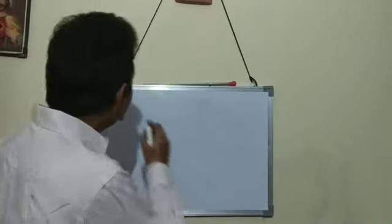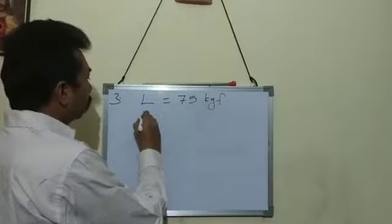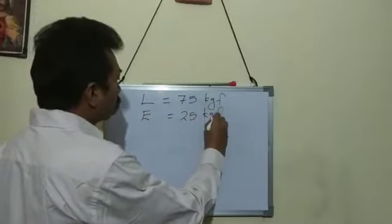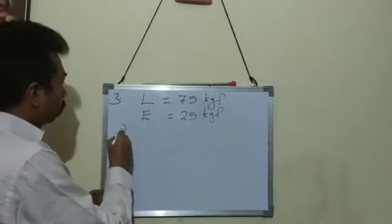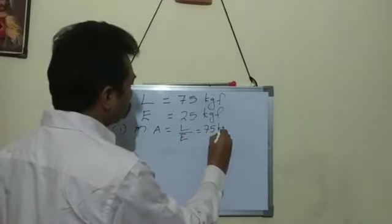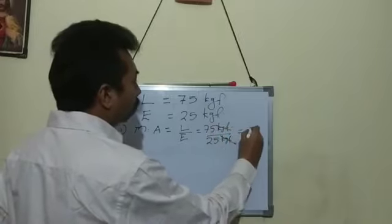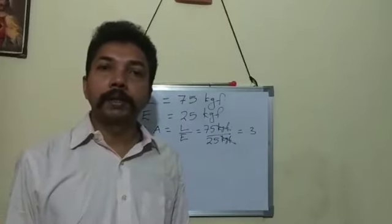Now doing the third question. In a block and tackle system consisting of three pulleys, a load of 75 kilogram-force is raised with an effort of 25 kilogram-force. Load is equal to 75 kgf and effort is equal to 25 kgf. First, find the mechanical advantage: load upon effort equals 75 kgf upon 25 kgf — kgf cancels — giving 75 divided by 25 equal to 3. So mechanical advantage is equal to 3.